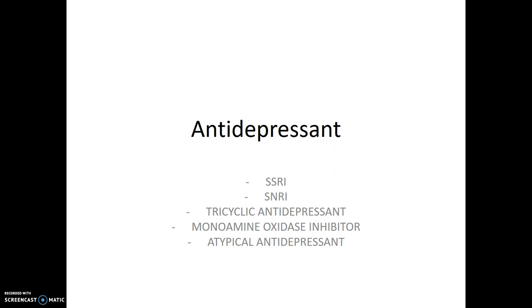As written on the first slide, we are going to talk about five different types of antidepressants: SSRIs, SNRIs, TCAs, MAOIs, as well as atypical antidepressants. I'm going to focus on those atypical antidepressants that are famous in exams, since atypical antidepressants are not so common, but it's good to know which ones are common and which are not.